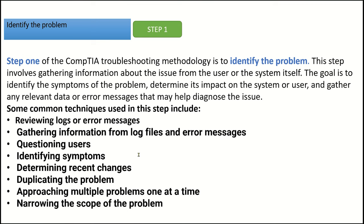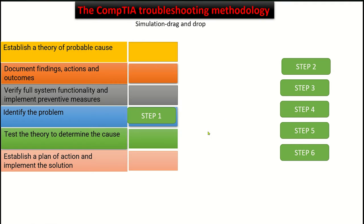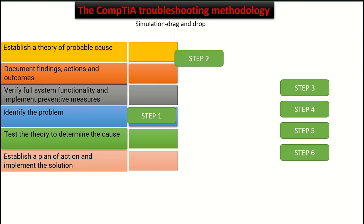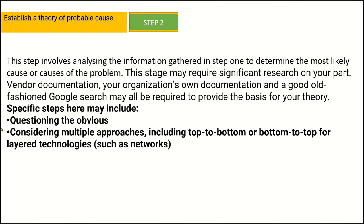So the first step is identify the problem. Now we're going to step number two. After you know the problem, what are you going to do second? You're going to establish a theory of probable cause. This is the second step.